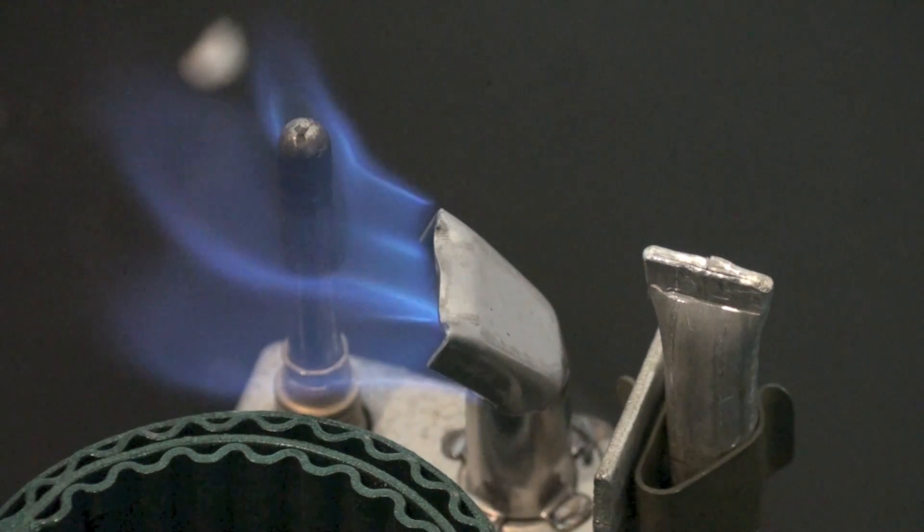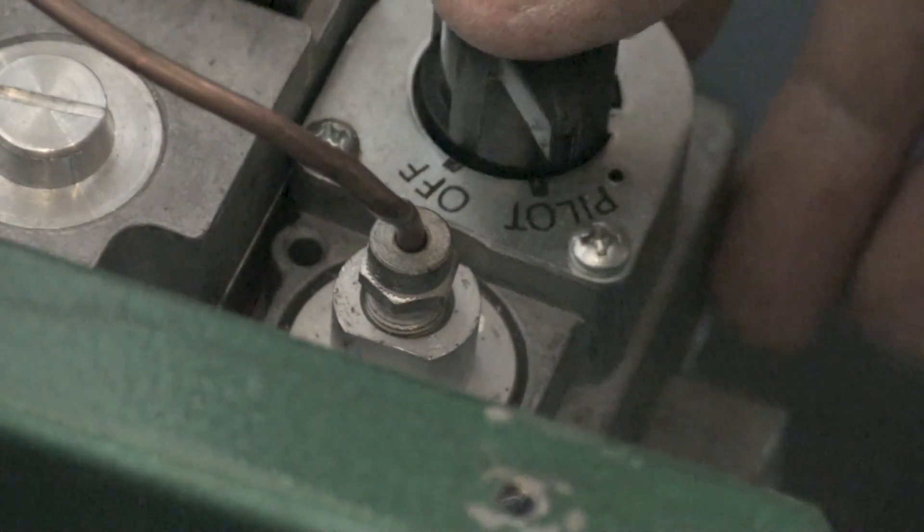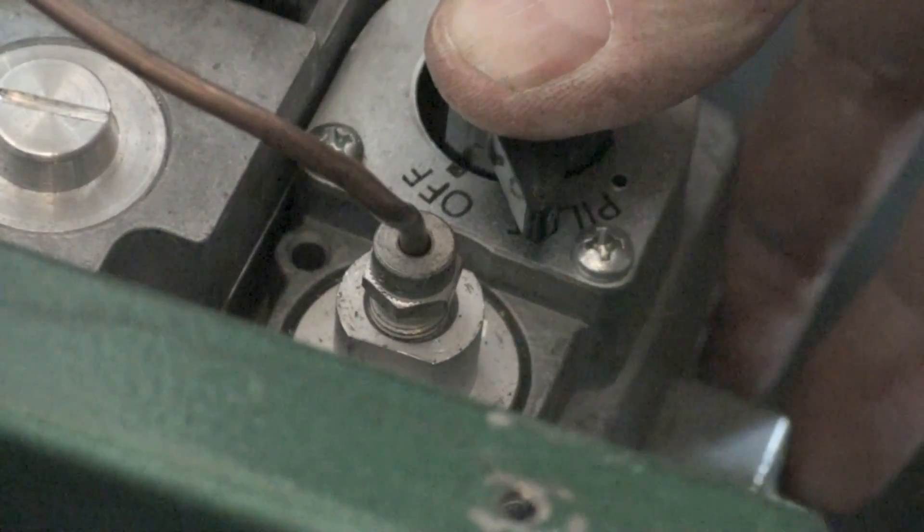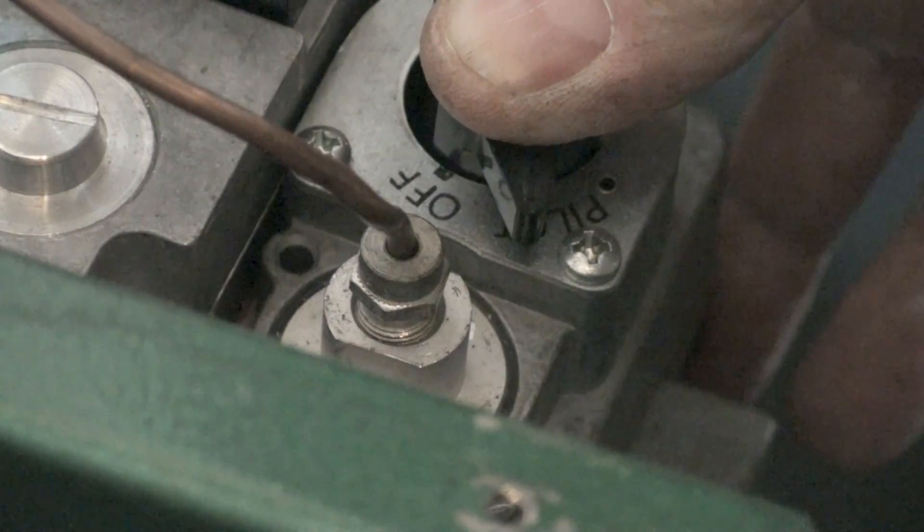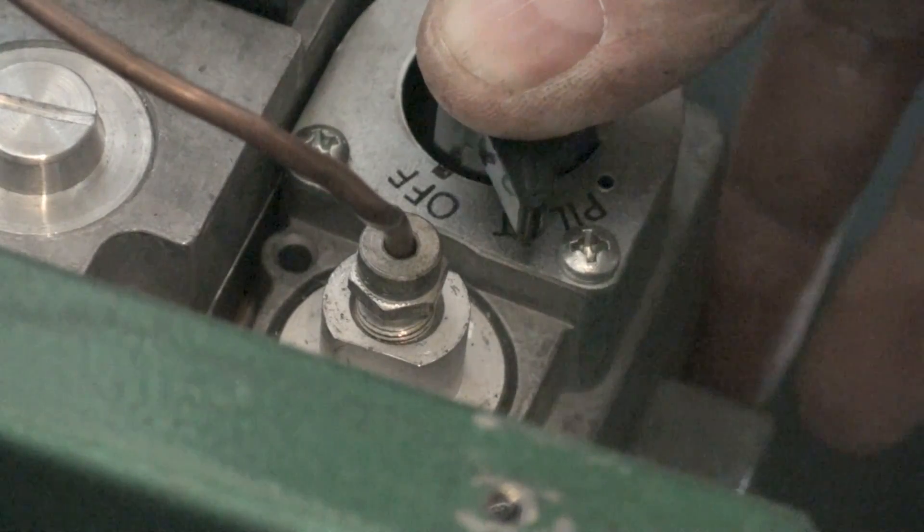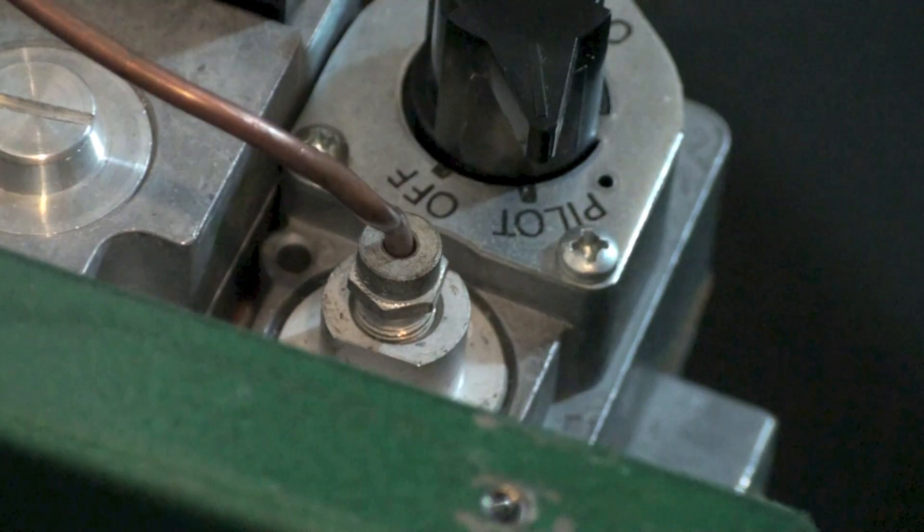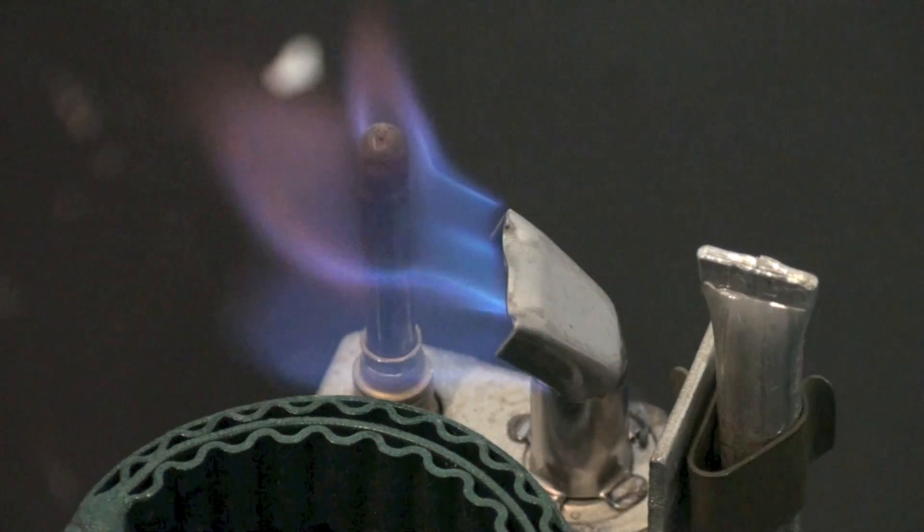You're going to hold the button down. Right there, you'll be holding that button down until the pilot stays on when you lift it off. If you lift it off and it drops out, then you've got to try again.